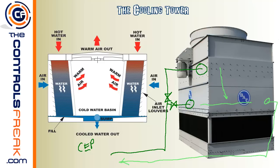The bypass forces hot water directly into the basin without going across the tower fill. The reason you'd do this is when it's very cold outside — running the water across the tower could make it too cold, which actually hurts the chiller. If the condenser water gets too cold, chiller efficiency degrades, similar to running your home AC when it's really cold outside. So the bypass maintains the required condenser water set point by sending warmer water directly back to the chiller.